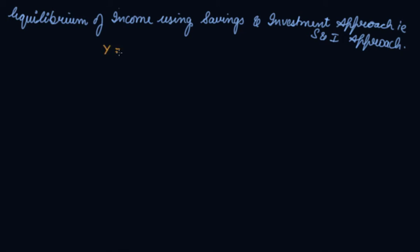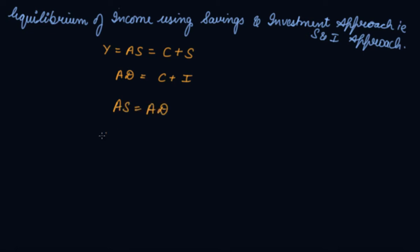Your income is equal to your aggregate supply because your output helps in income generation. So income equals aggregate supply, which equals consumption plus savings. Your aggregate demand equals consumption plus investment plus government expenditure plus exports minus imports. But we take the assumption that there is no government and there is a closed economy, so aggregate demand becomes consumption plus investment. Therefore, aggregate supply equals aggregate demand means consumption plus savings equals consumption plus investment, so savings equals investment.